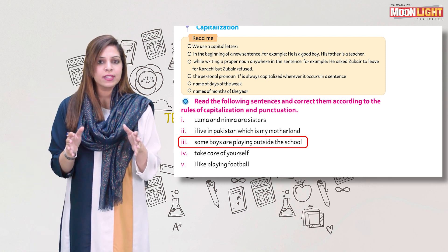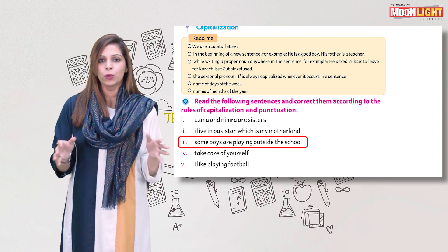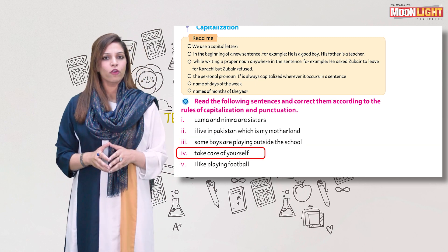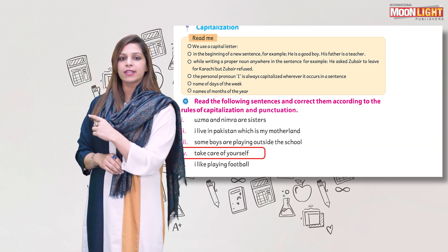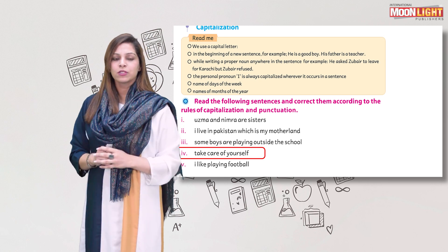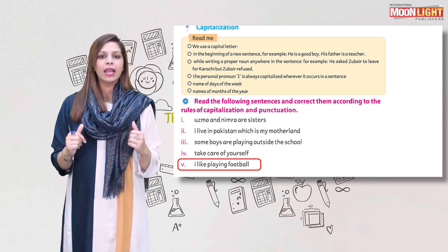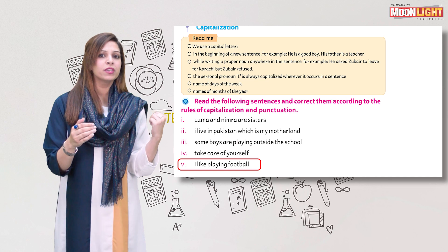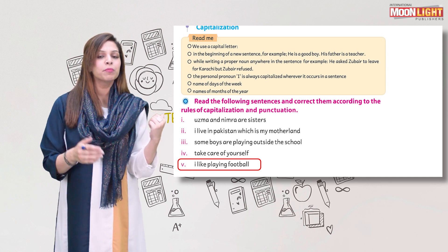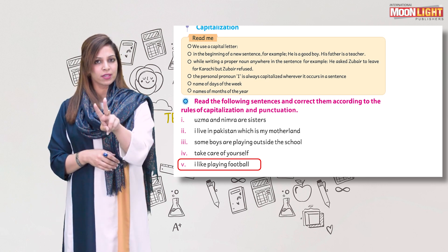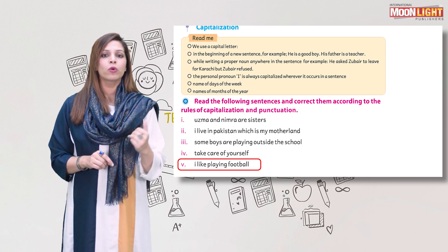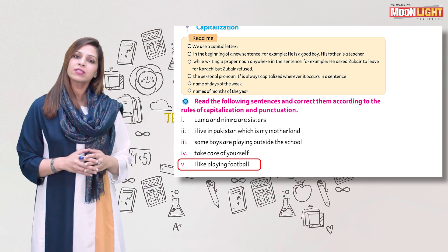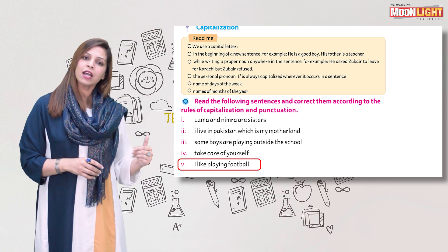Number four: 'Take care of yourself.' The first word is 'take', so T will be capital. Number five: 'I like playing football.' I is going to be capital for two reasons — first, the pronoun I is always written in capital form, and second, it is the start of a sentence.